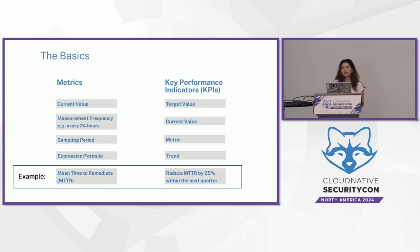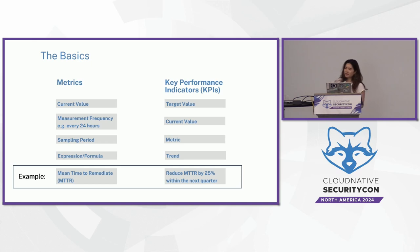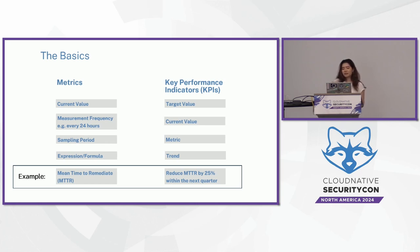Before we dive in, let's clear up some confusion around metrics and KPIs, because these terms are used interchangeably. Metrics are simply measurements — a snapshot of what's happening right now. KPIs, on the other hand, are used to track your progress towards a specific target. Think of them like a fitness tracker: it tells you how close you are to your daily goals. In this example, mean time to remediate is normally used as a metric — it's just a number. But by saying that we will reduce that time by 25% this quarter, that is a KPI. That is the main difference between them.